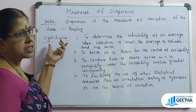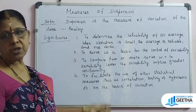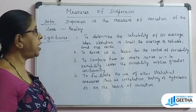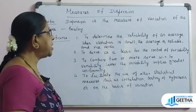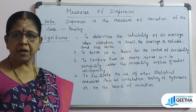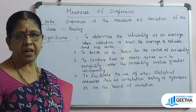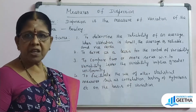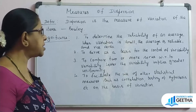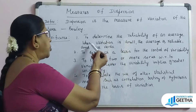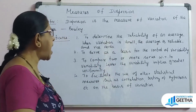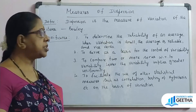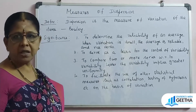What are the significances? Why are we going to study this measure of dispersion? To determine the reliability of an average — we are going to study the average. When variation is small, the average is reliable. If variation is lower, the reliability is higher.